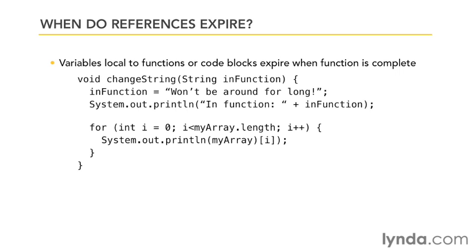Within this function, there are two scopes. Variables declared directly within the function are available as long as the function is executing. So the variable in the function would be available until the function is done, and then it would expire.